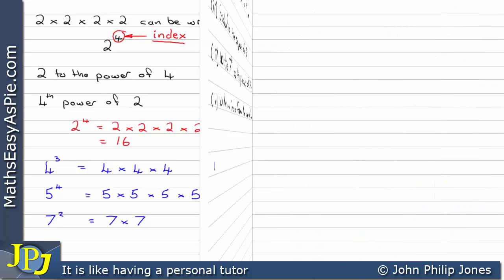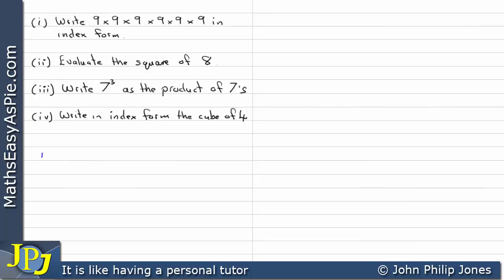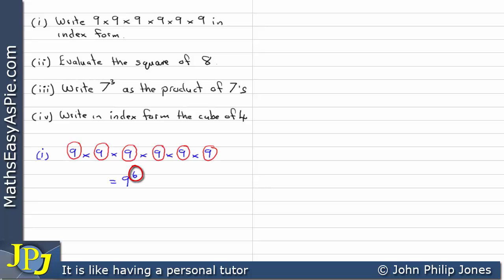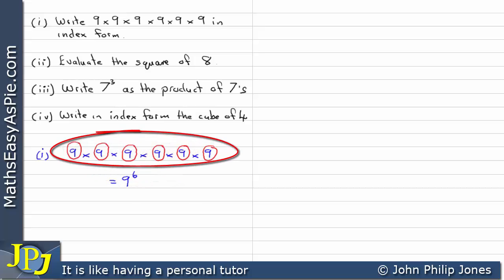Let's have a go at answering these four examples. For the first one, we can see 9 is multiplied together a number of times — counting them: 1, 2, 3, 4, 5, 6 nines — so we write that as 9 to the power of 6, where the 6 is in the index position. This is 9 times 9 times 9 times 9 times 9 times 9, written in index form as 9 to the 6, because there are six 9's all multiplied together.